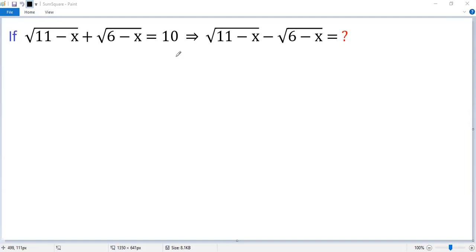The sum of two square roots is 10. What is the difference of these two square roots?